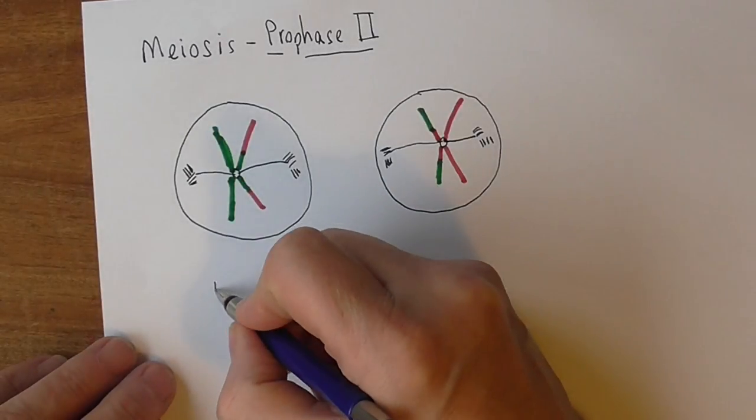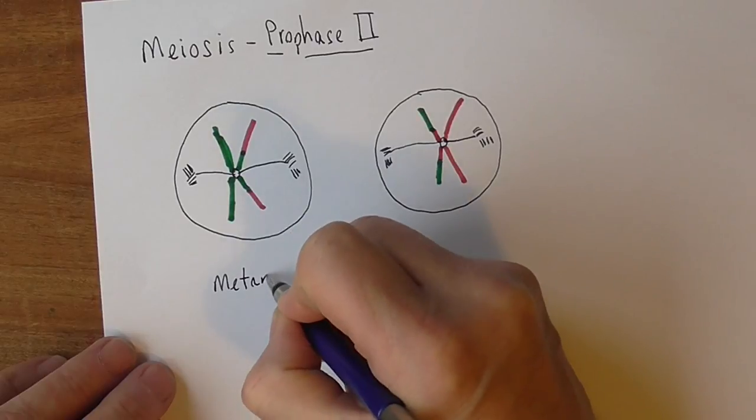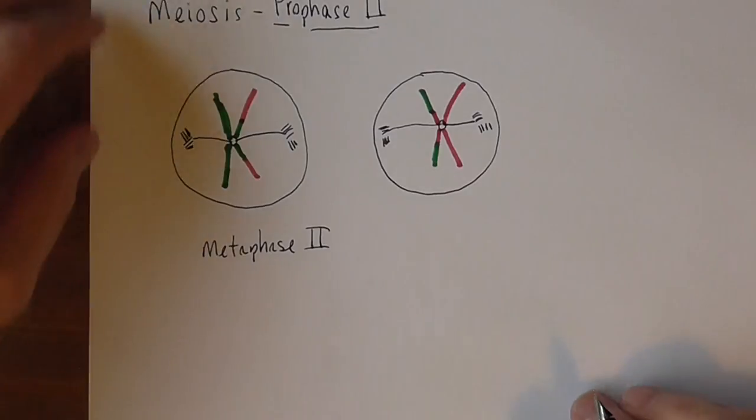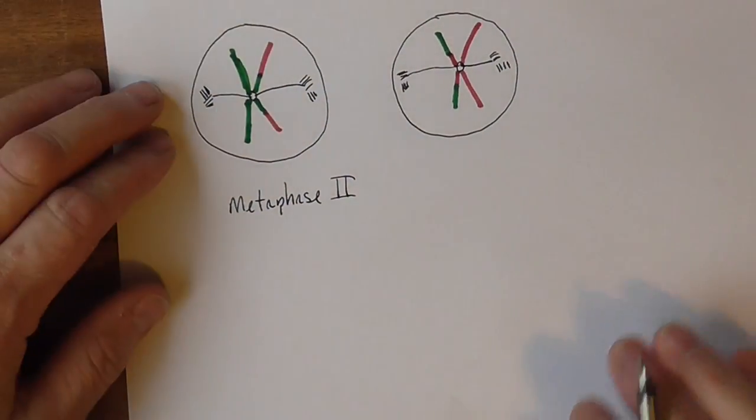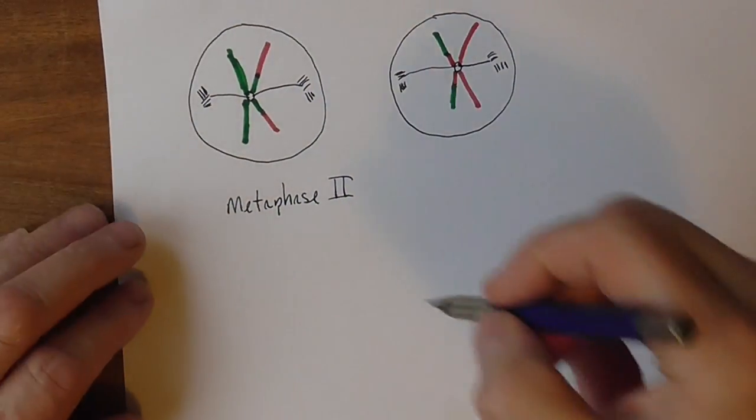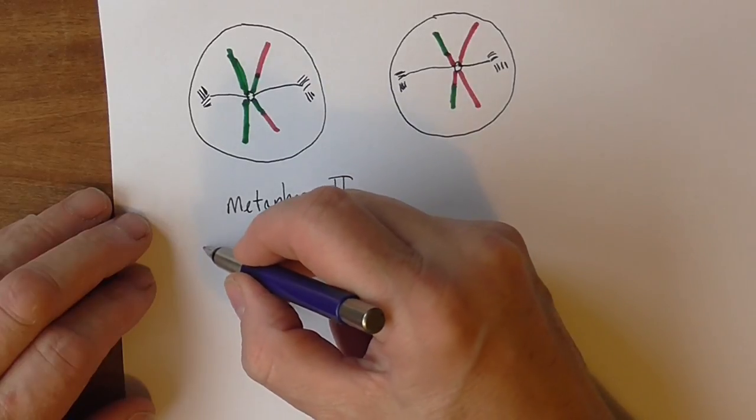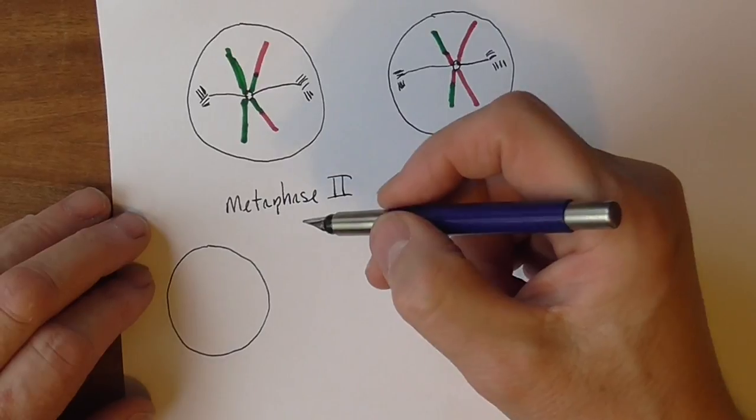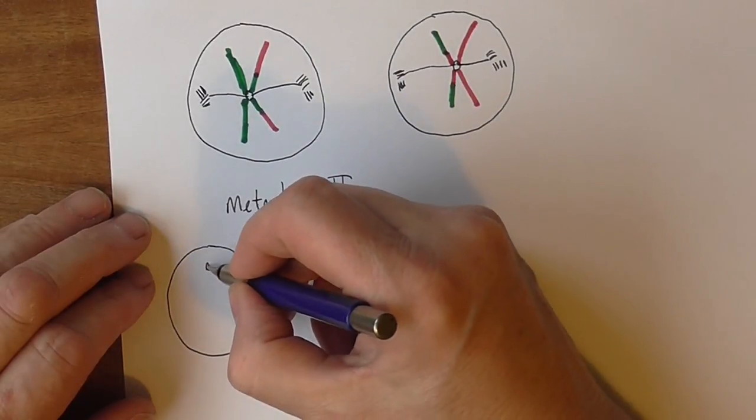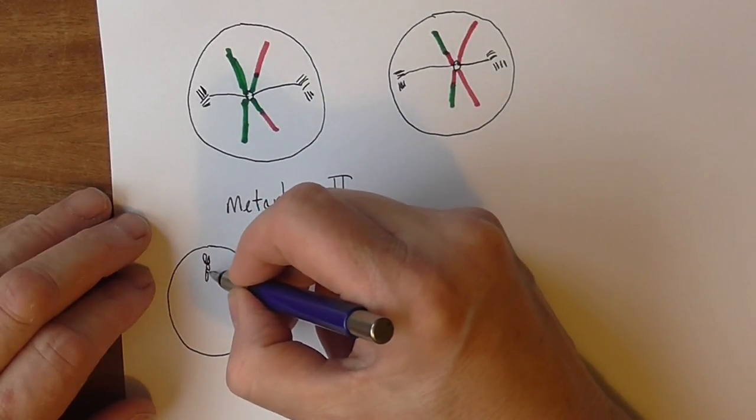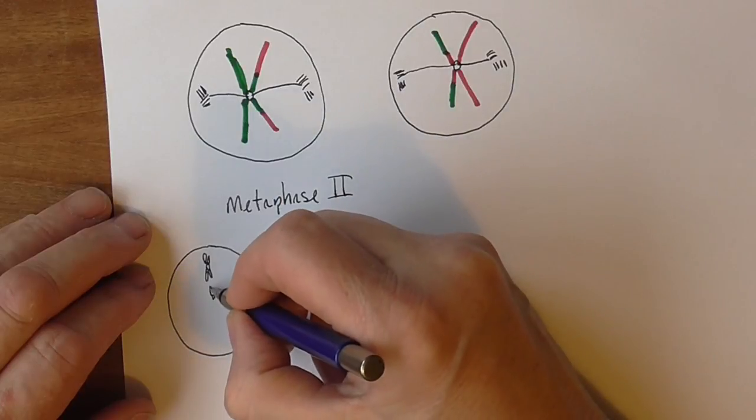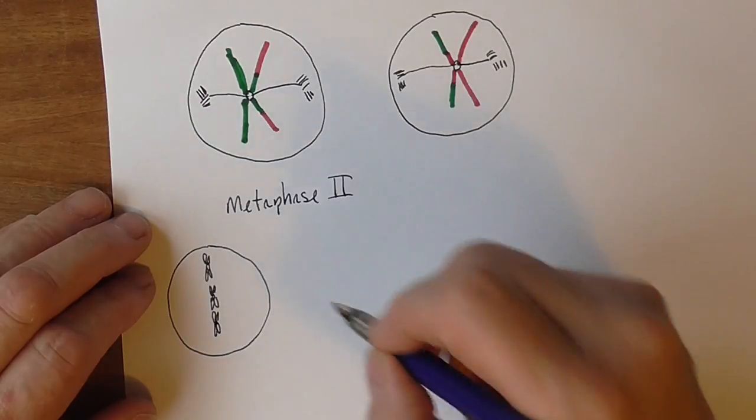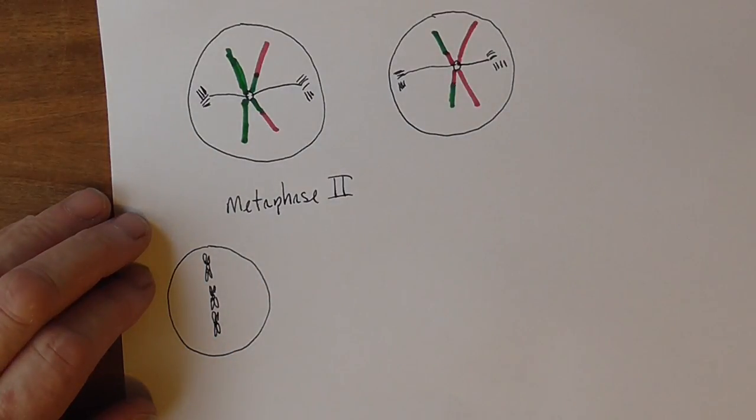Next we have metaphase 2. Now here again the tetrads line up in the equatorial plane of the cell. So there's 23 of them now isn't there. In each cell they line up again so everything's nice and tidy. Those 23 pairs line up.